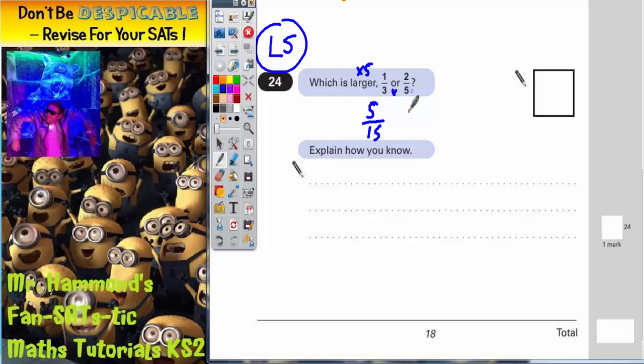With 2/5, to get that into 15, how do we get fifths into fifteenths? We times by 3, because 3 fifths are 15. So we've got to do the same to the top. So we want 2 times 3, which is 6.